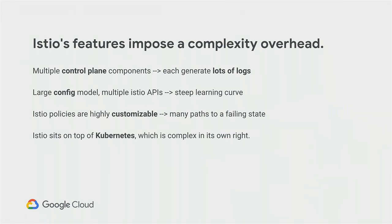Raise your hand if you have tried to bring Istio into production at your organization. Keep your hand up if it has been a challenge. Istio is still a relatively new piece of technology — it released 1.1 a couple of weeks ago. There are real challenges when adopting Istio, especially on top of Kubernetes. With multiple control plane components, there's a lot going on, and the APIs are broad, complex, and highly configurable.